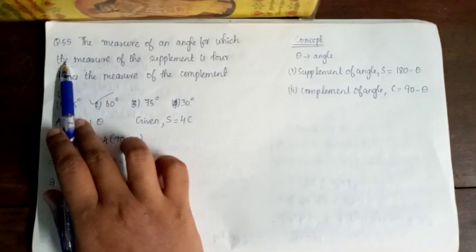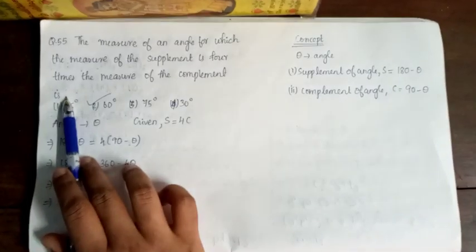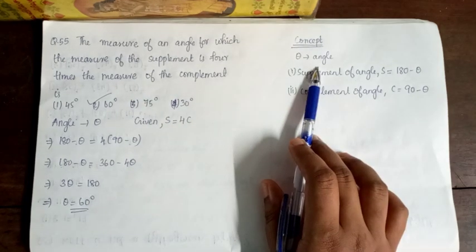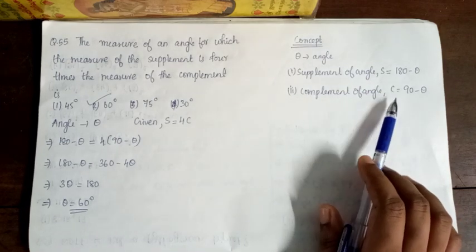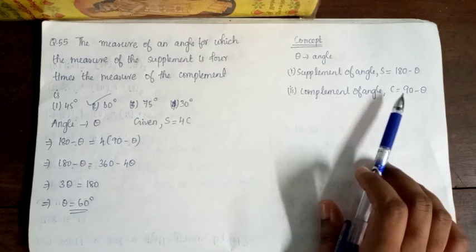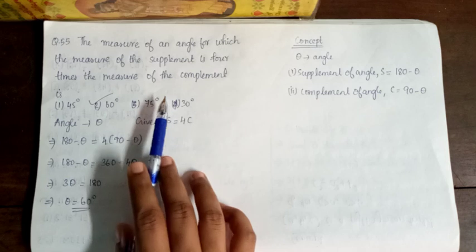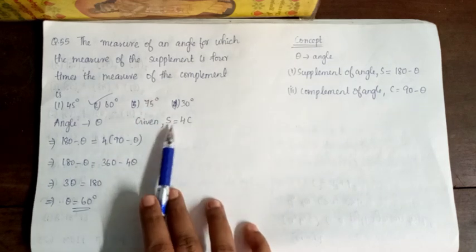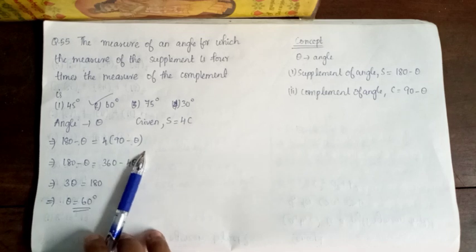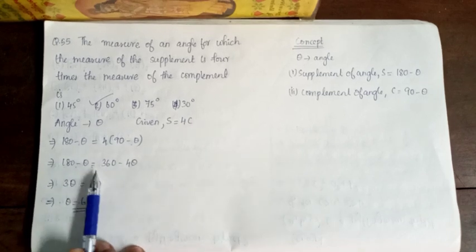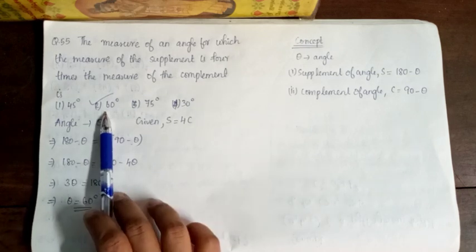Next question, 55. Find the measure of an angle for which the supplement is 4 times the measure of the complement. Let the angle be theta. Supplement equals 180 minus theta, complement equals 90 minus theta. Setting S equals 4 times C: 180 minus theta equals 4 into (90 minus theta), so 180 minus theta equals 360 minus 4 theta, giving theta equals 60 degrees. So option 2 is correct.